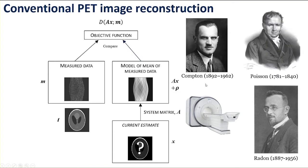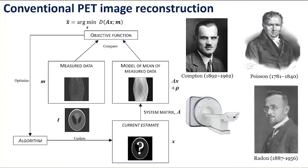We use the well-known Poisson distribution — hence Simeon-Denis Poisson — where we compare our current model of the mean data with the noisy distribution, assumed to follow Poisson statistics due to the limited number of counts. We use a distance measure D between the forward projected prediction AX and the measured data vector M — which for PET imaging is nearly always given by the negative Poisson log-likelihood. We then use an iterative reconstruction algorithm to find the representation X which, when forward modelled with A, best corresponds to measured data M.